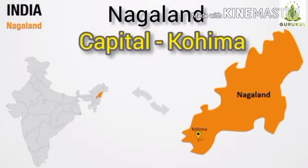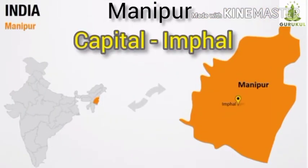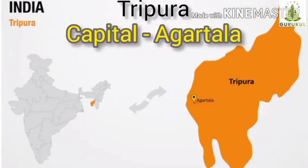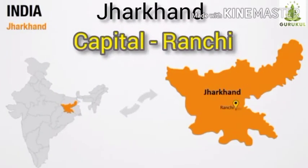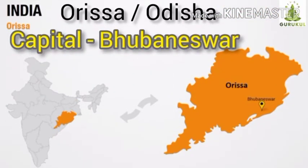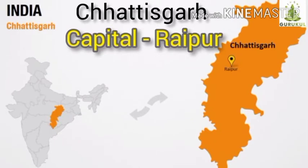Nagaland — capital is Kohima. Then Manipur — capital is Imphal. Tripura — capital is Agartala. Mizoram — capital is Aizawl. Children, Mizoram is also called the land of blue mountains. Then Jharkhand — capital is Ranchi. Odisha — capital is Bhubaneswar. This state is well known for the Sun Temple at Konark. Next, Chhattisgarh — capital is Raipur.